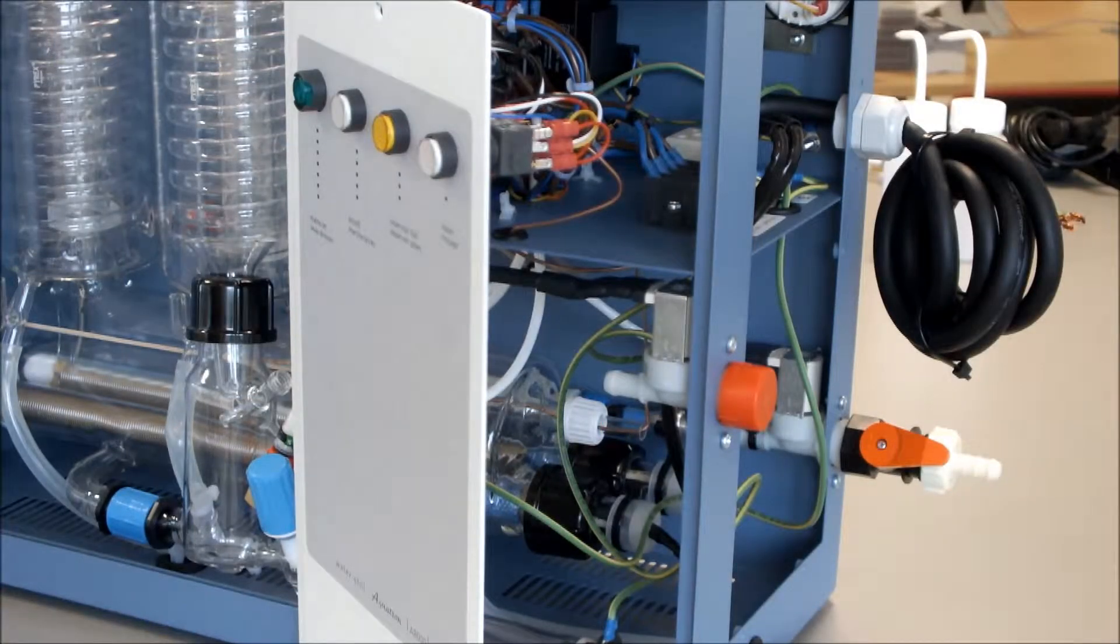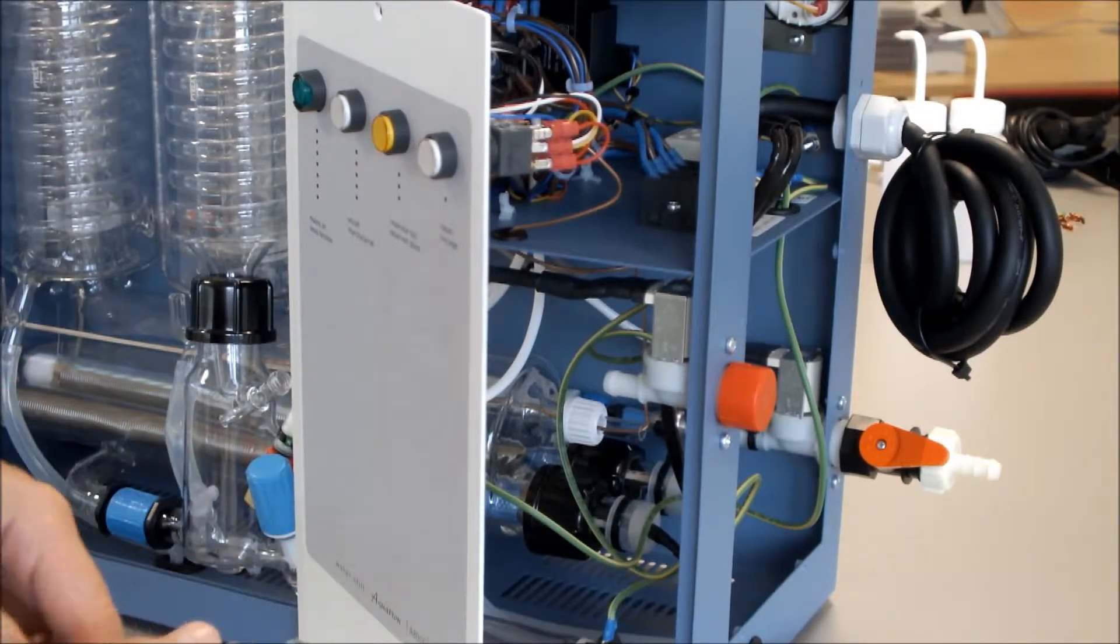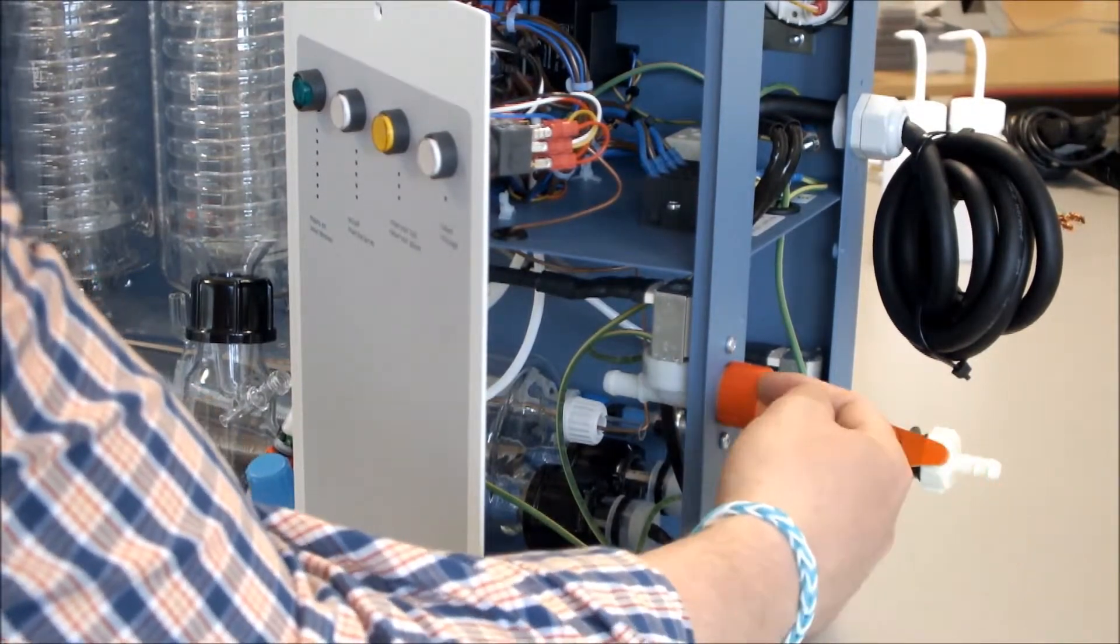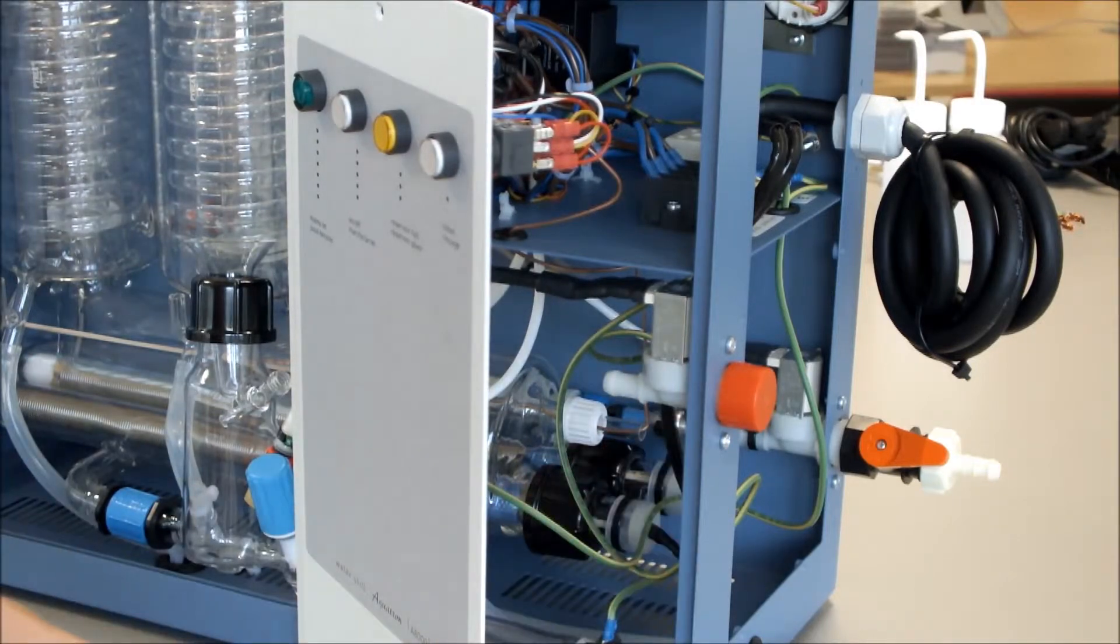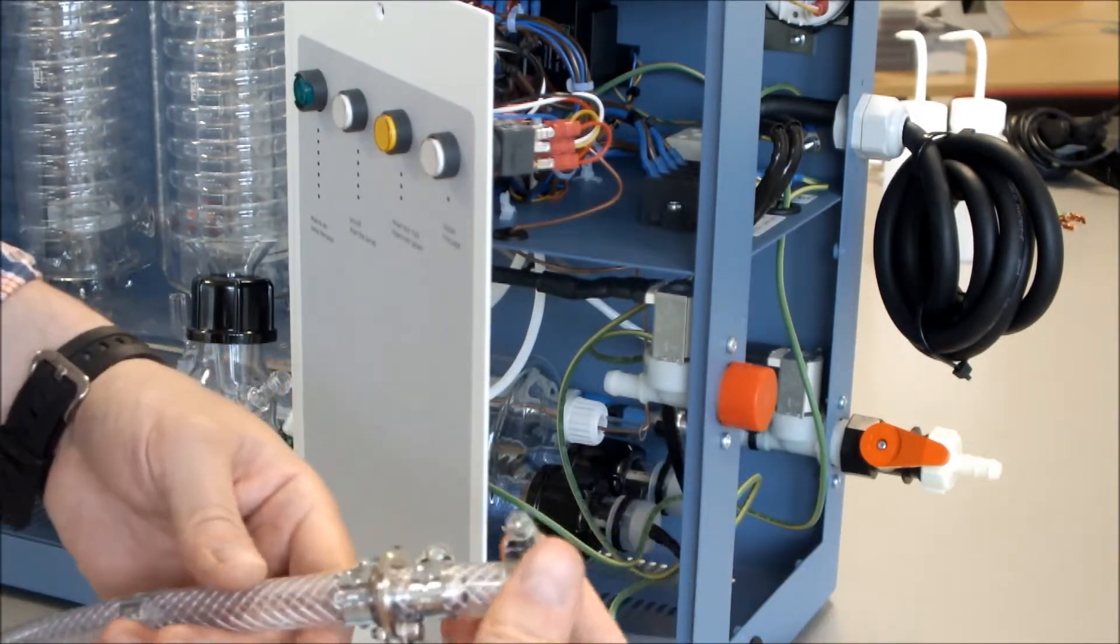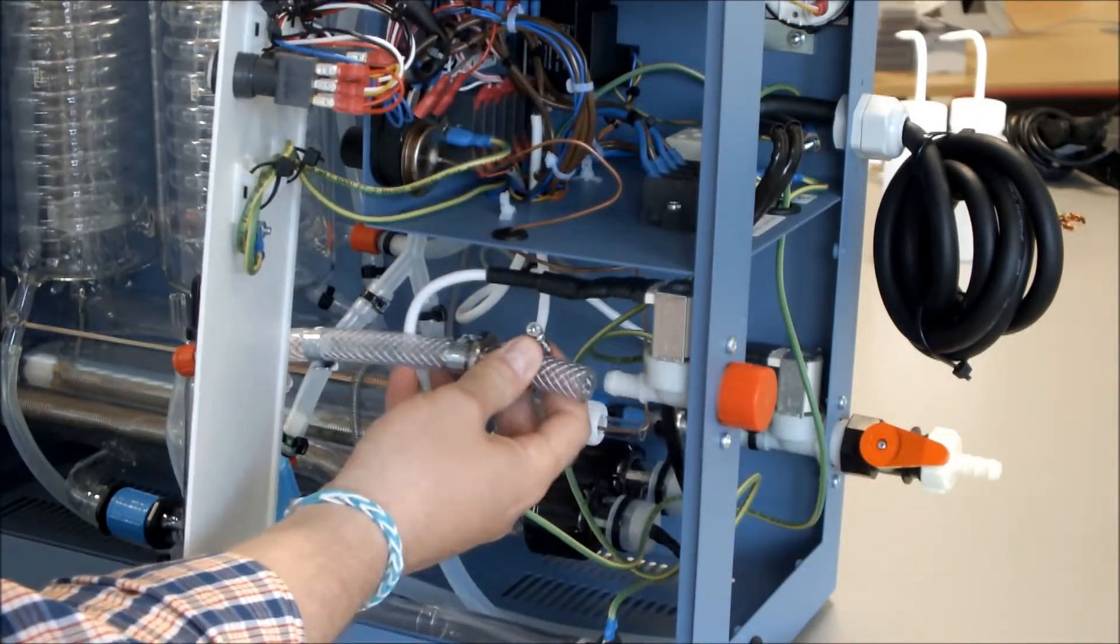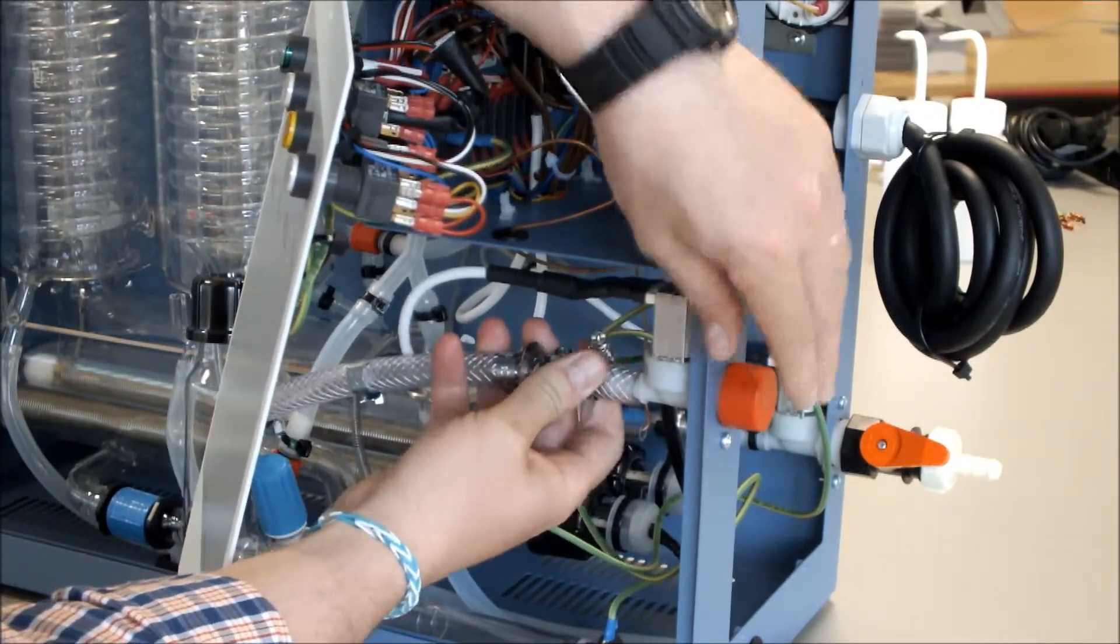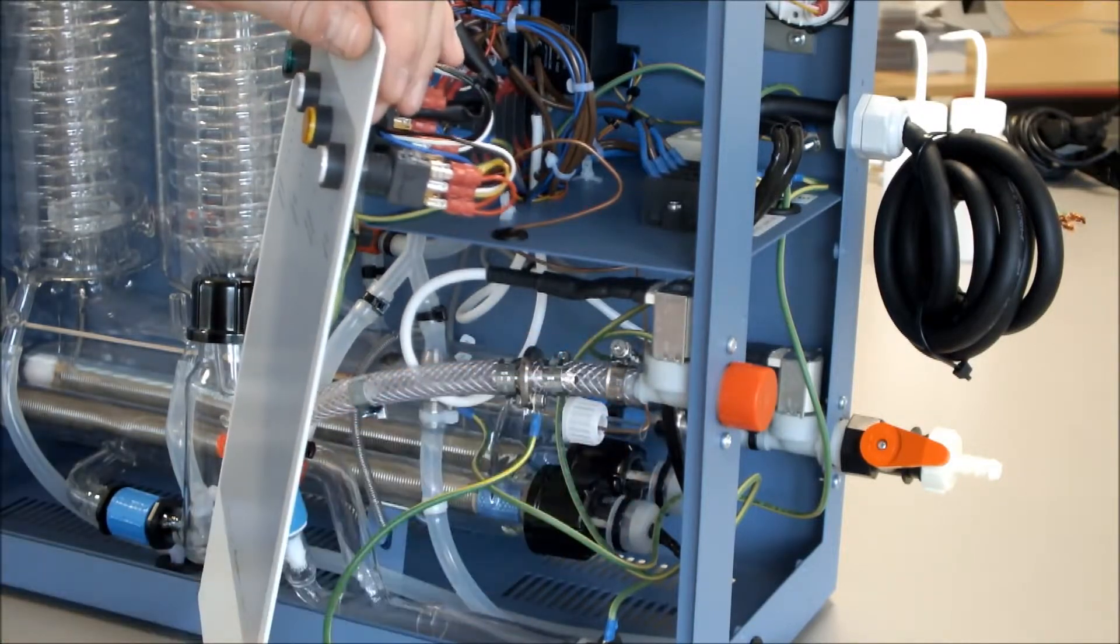The next thing to do is to connect our deioniser pipe assembly to our deionised or pretreated water inlet, and we connect it to the solenoid there. The first thing we need to do is put our jubilee clip onto our pipe. We fit the pipe in there and onto the solenoid. The jubilee clip is then tightened up on there.